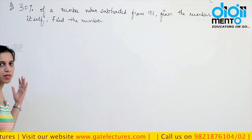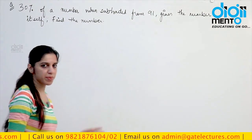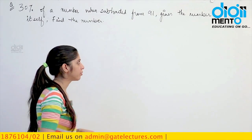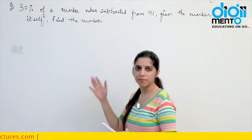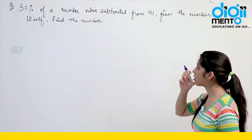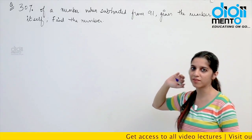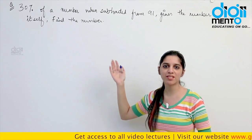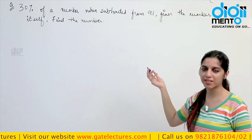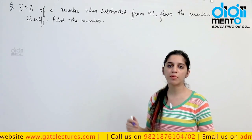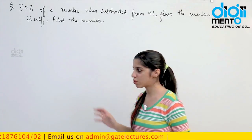Look at this question. They say that 30% of a number when subtracted from 91 gives the number itself — find the number. These are basically very easy questions. Here you cannot assume the number to be 100, because they are asking you for the number itself. You cannot assume it to be 100 anywhere the answer is required as a specific number. So assume any variable, let's say X. You can assume the number to be 100 only when they are asking the answer in percentages — then the number cancels down anyway.